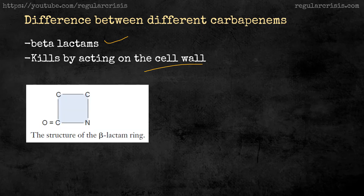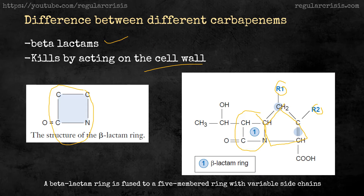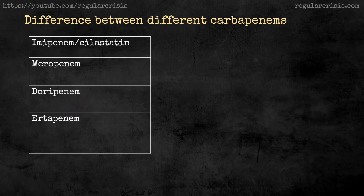All beta-lactam antibiotics have this four-membered ring structure. In carbapenems, this four-membered ring is attached to a five-membered ring, and on this five-membered ring we have an R1 group and an R2 group. R1 and R2 are different molecules attached to this five-membered ring, and the difference in these groups gives different properties to the different carbapenems. In carbapenems we have four antibiotics: imipenem-cilastatin, meropenem, doripenem, and ertapenem.